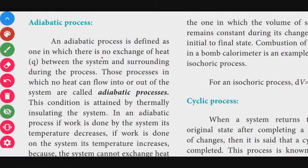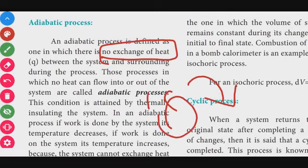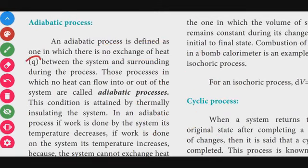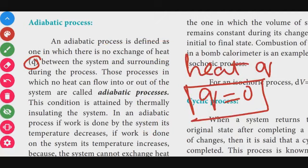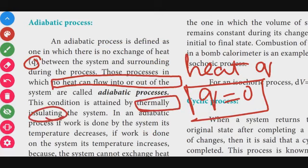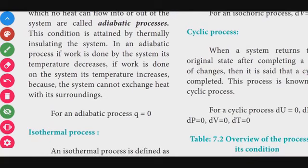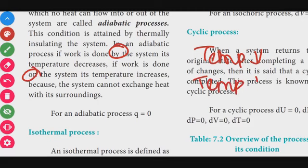Adiabatic process: there is no exchange of heat between the system and surroundings. Heat cannot flow in or out. Therefore, q = 0 for an adiabatic process. This condition is achieved using a thermally insulating boundary, such as a thermos flask. In an adiabatic process, if work is done by the system, its temperature decreases; if work is done on the system, its temperature increases — because no heat is exchanged.